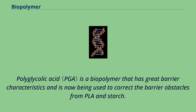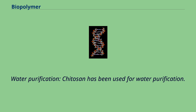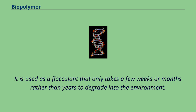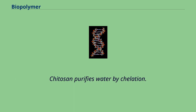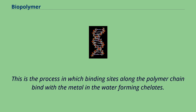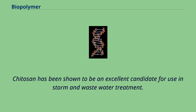Water purification: chitosan has been used for water purification. It is used as a flocculant that only takes a few weeks or months rather than years to degrade into the environment. Chitosan purifies water by chelation — the process in which binding sites along the polymer chain bind with the metal in the water forming chelates. Chitosan has been shown to be an excellent candidate for use in storm and wastewater treatment.